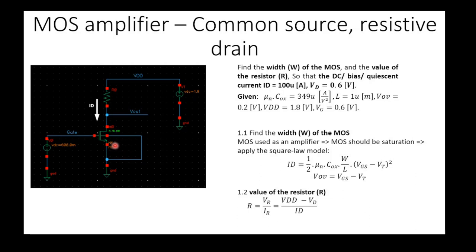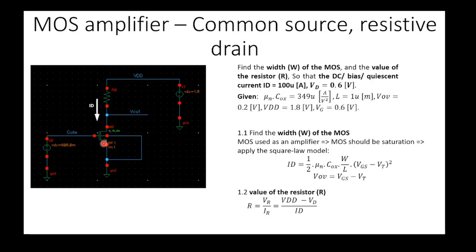NF usually means the number of fingers of the MOS — related to the layout. In this case we don't care much. M usually means the multiplier: multiplier equal to 1 means we have only one MOS, but if the multiplier equals 2 it means we have two MOSFETs connected in parallel, with drain-to-drain, gate-to-gate, and source-to-source connections. For simplicity, multiplier equals 1 and number of fingers equals 1.